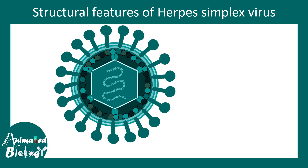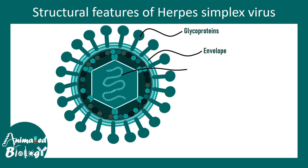This is the Herpes simplex virus and we are going to talk about the structure first. It is a double-stranded DNA virus. Here you can see the glycoproteins on the surface, then the envelope. They have double-stranded genomic DNA as their genomic material, along with structural proteins and the capsid.